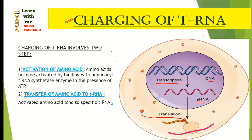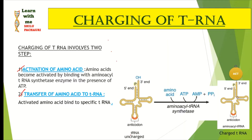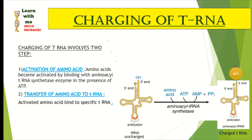When transfer RNA does not have an amino acid attached, it is called uncharged transfer RNA. Once it is attached to an amino acid, it becomes charged transfer RNA. The charging of transfer RNA occurs in two steps: the first is activation of the amino acid, and the second is transfer of the activated amino acid to the transfer RNA.